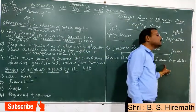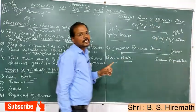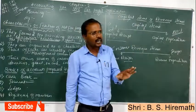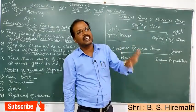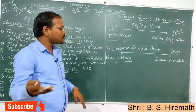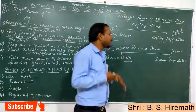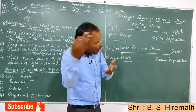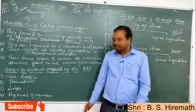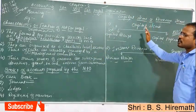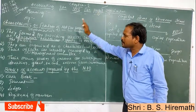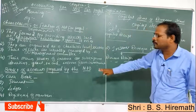Revenue expenditure items go to the debit side of the income and expenditure account. It is also recurring in nature — we pay it during the year. Examples include salary, wages, rent, and daily operating activity payments. That is revenue expenditure.